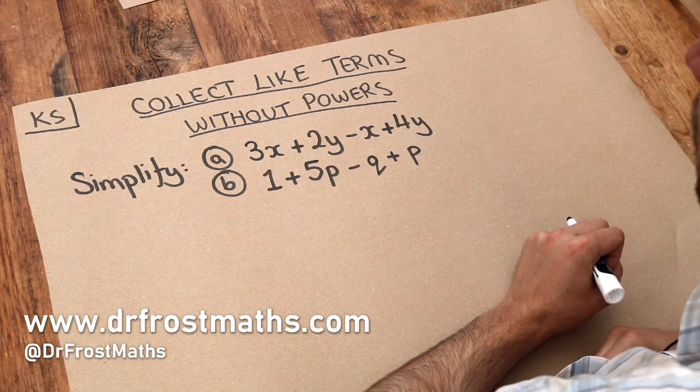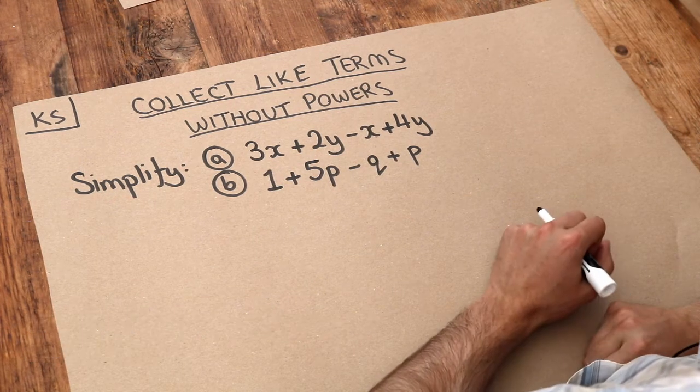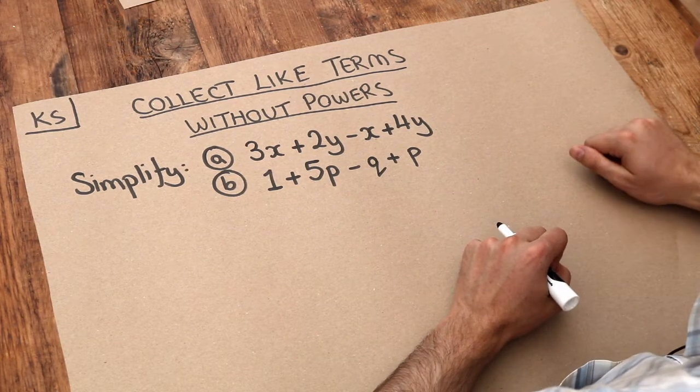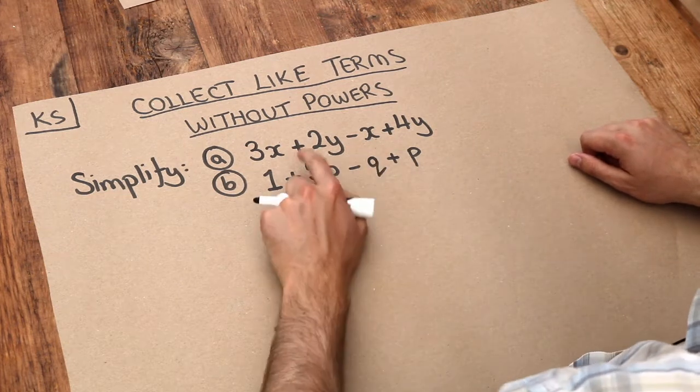In the previous video we saw how we could simplify algebraic expressions where we only had one variable involved. Here we've got a mixture of different variables, and by variables I just mean letters.